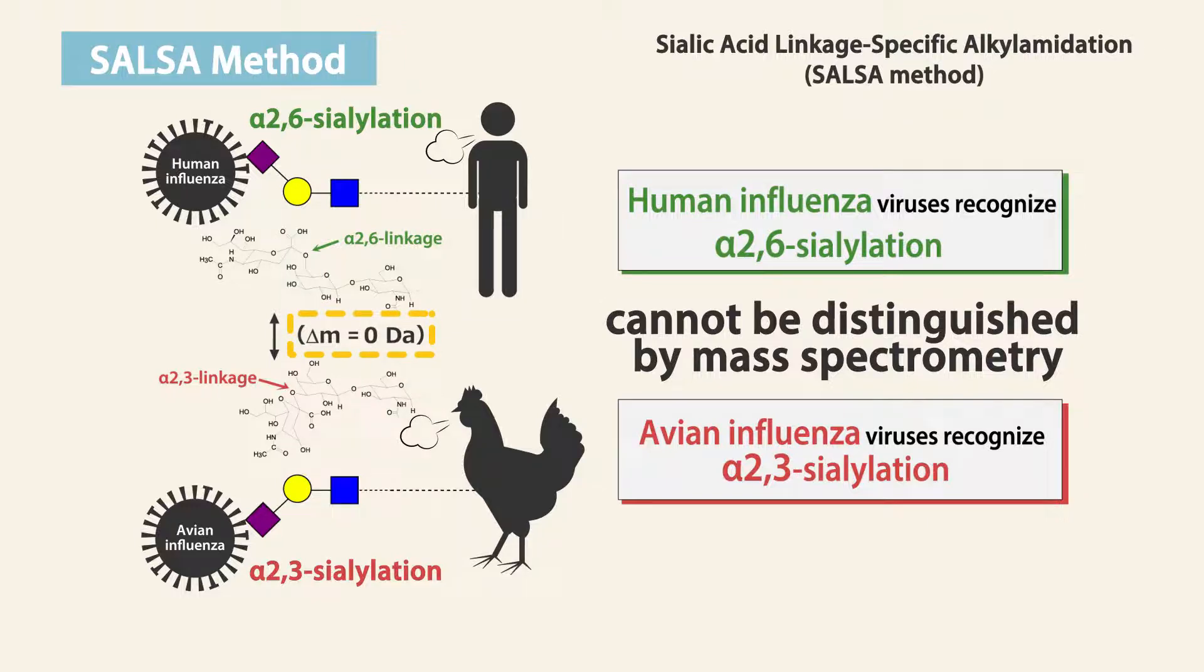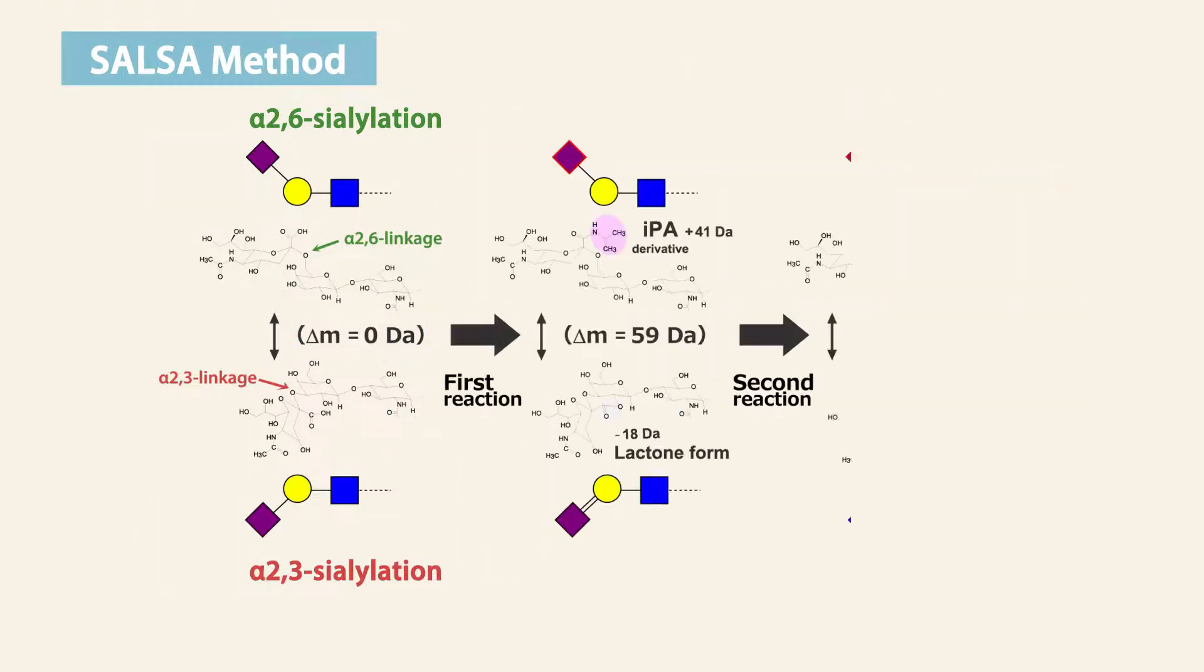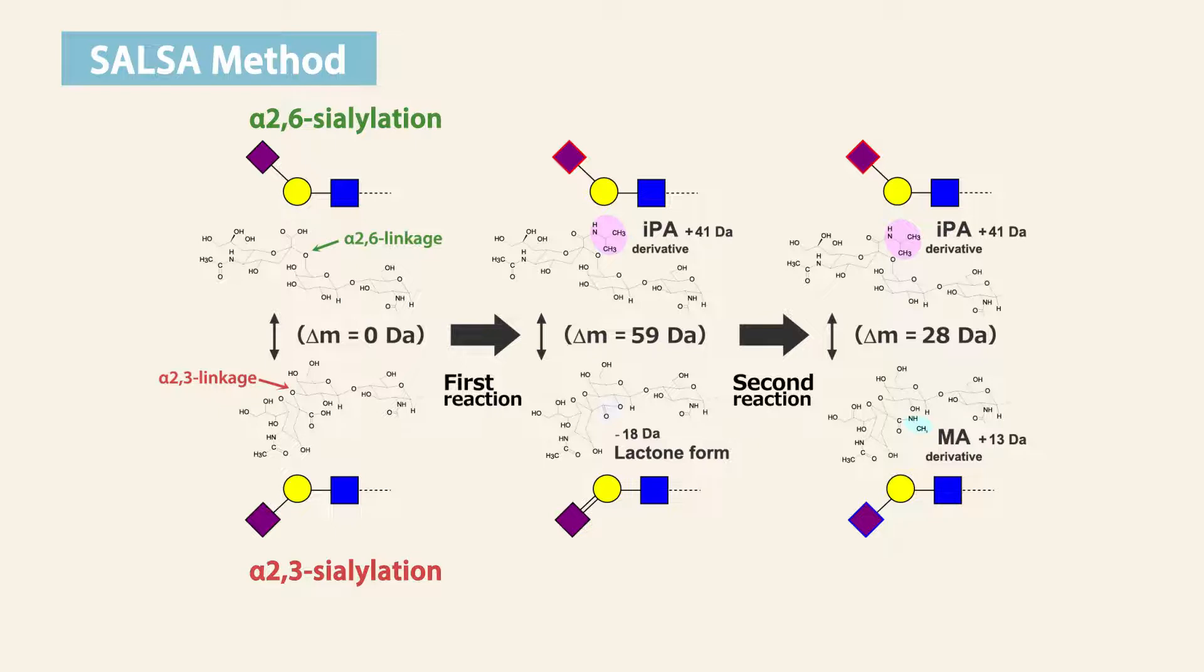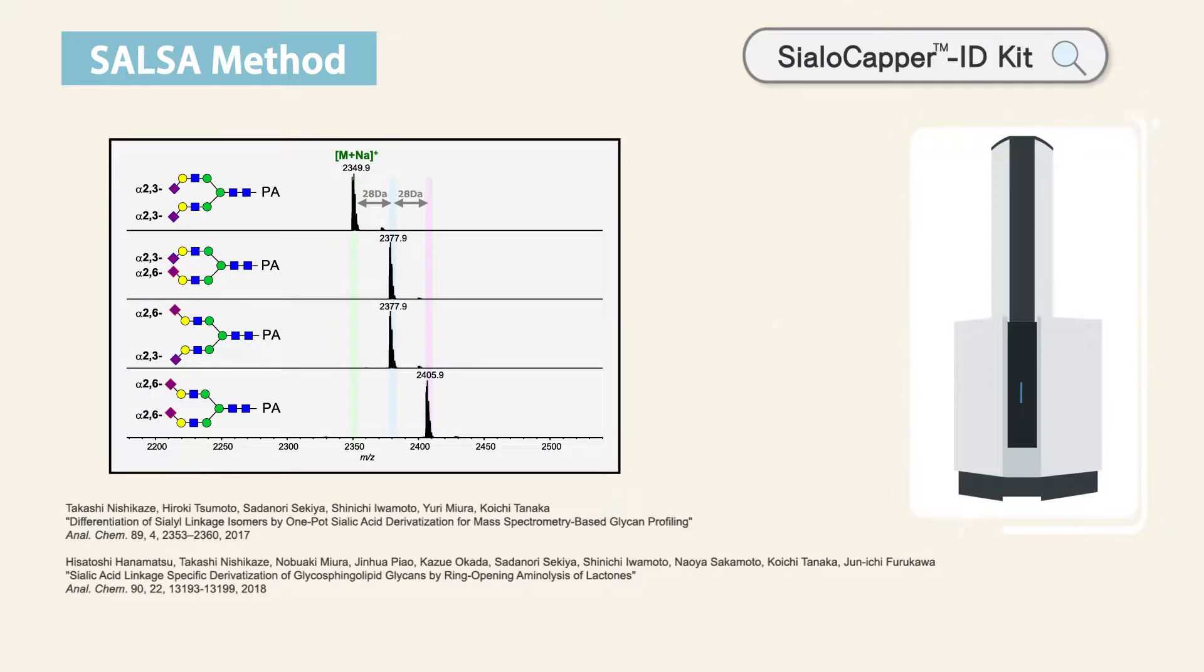However, we can discriminate the linkage isomers by mass spectrometry by giving a characteristic mass change according to each linkage type when protecting the carboxyl group of sialic acids with amide modification. We developed this method and launched the reagent kit in 2021.